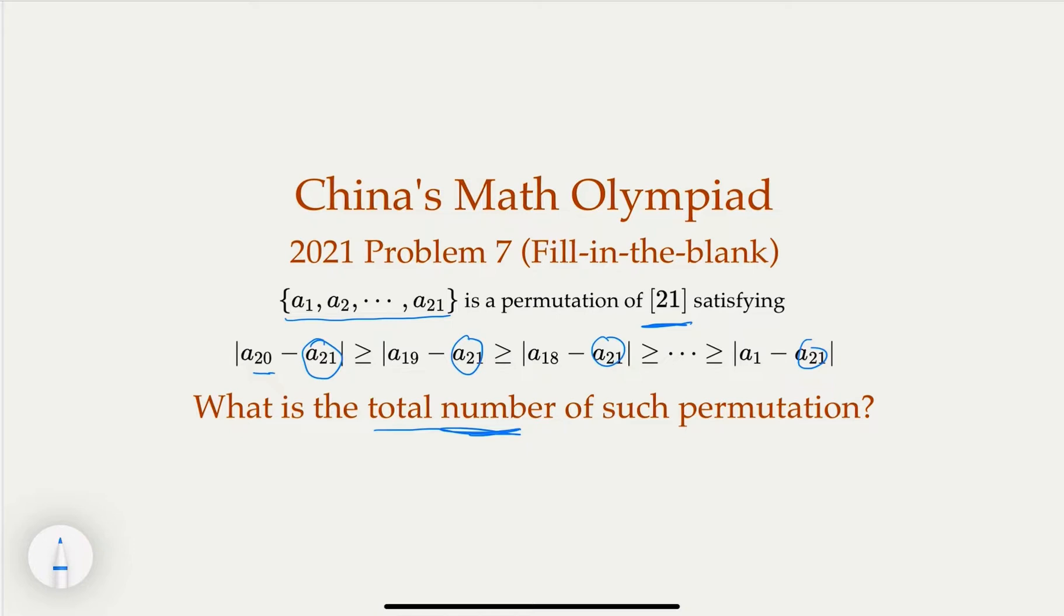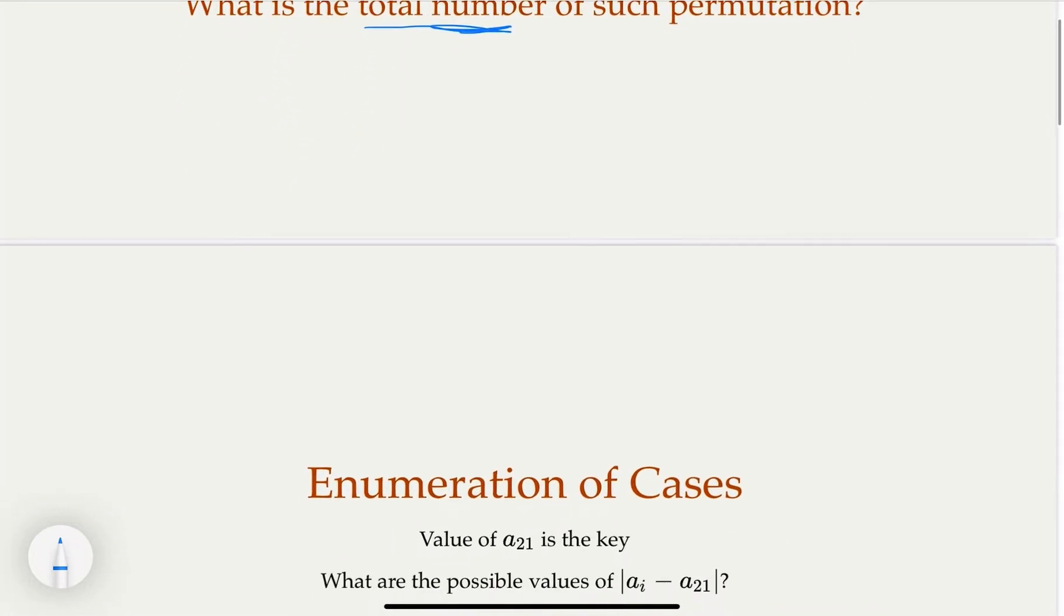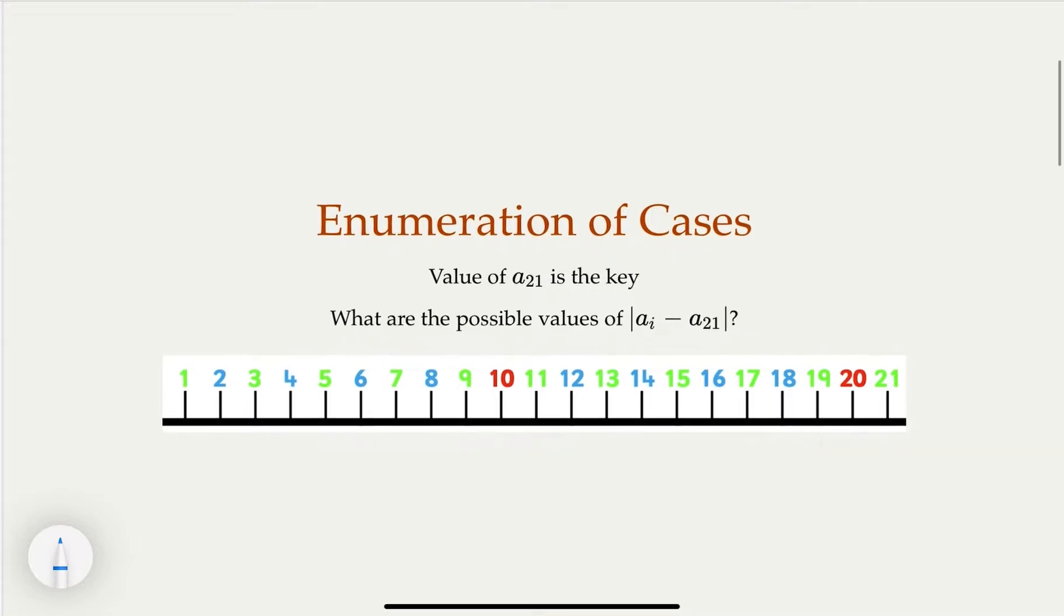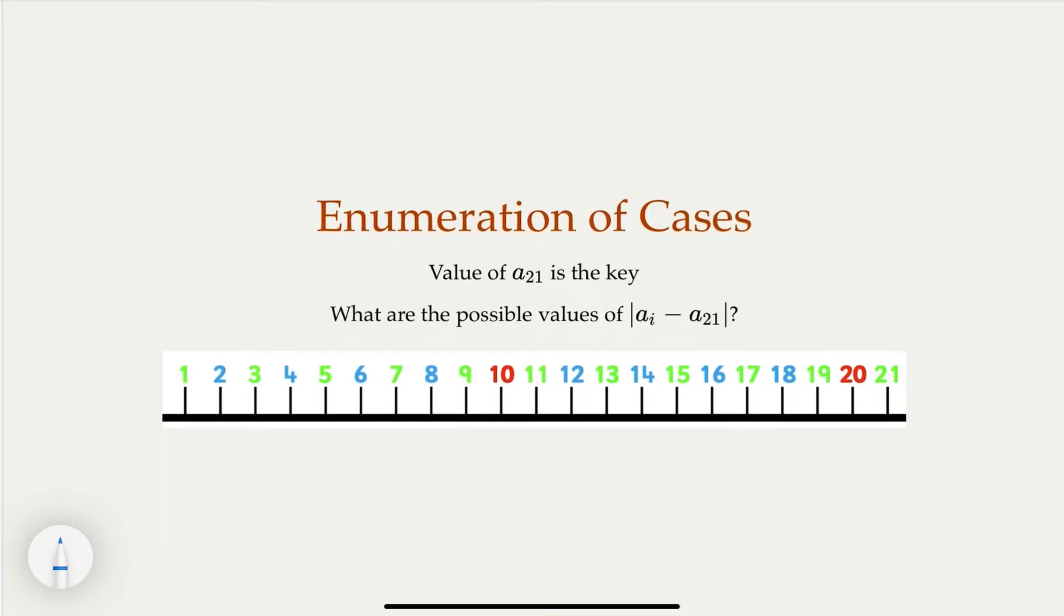So why don't you pause the video, try to solve the problem, and when you're ready, let's continue with the answer. And this problem, I think, is probably good to consider different cases for the actual value of the last element. In the permutation, it could be anywhere between 1 and 21. Now think about it.